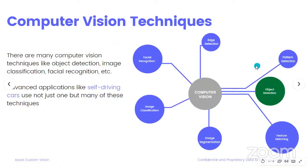Computer vision deals with all the problems you might have related to images and videos. A few of them include: facial recognition, which is very common nowadays; image classification problems; image segmentation problems; edge detection problems; pattern detection problems; and of course, object detection. Object detection and image classification are the two things we're going to talk about today, and the predictive model we built is going to be an object detection model.